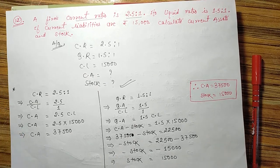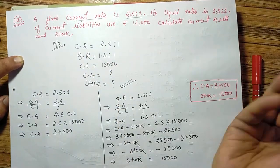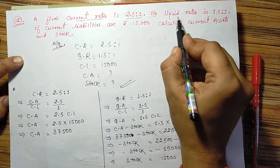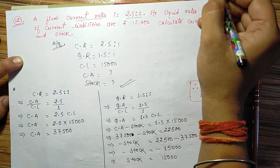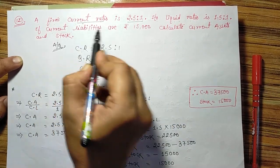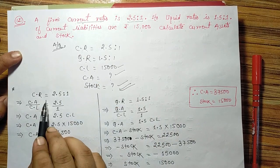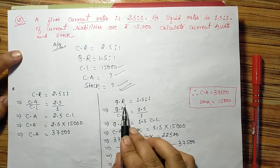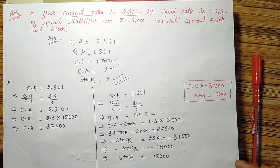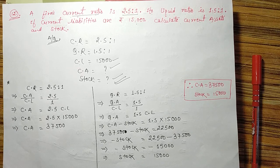Question 12: A firm has current ratio 2.5:1, liquid ratio (quick ratio) 1.5:1, current liabilities = ₹15,000. Find current assets and stock. First use current ratio to find current assets, then use quick ratio to find stock. Answers: Current Assets = ₹37,500 and Stock = ₹15,000. Take a screenshot and attempt it — it is easy and simple.